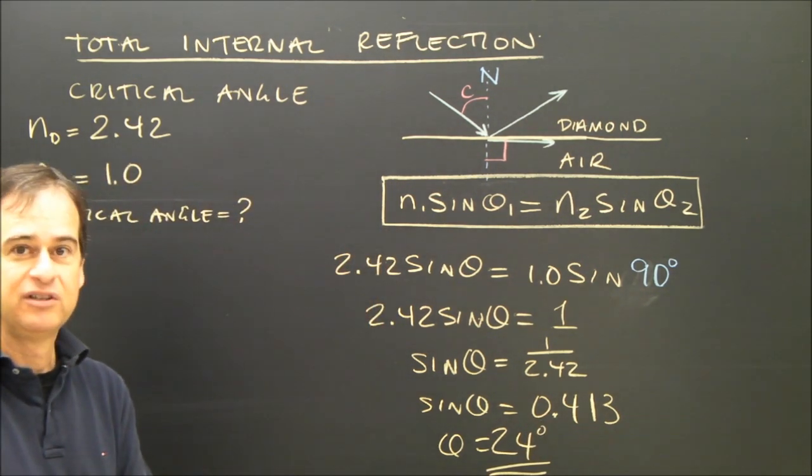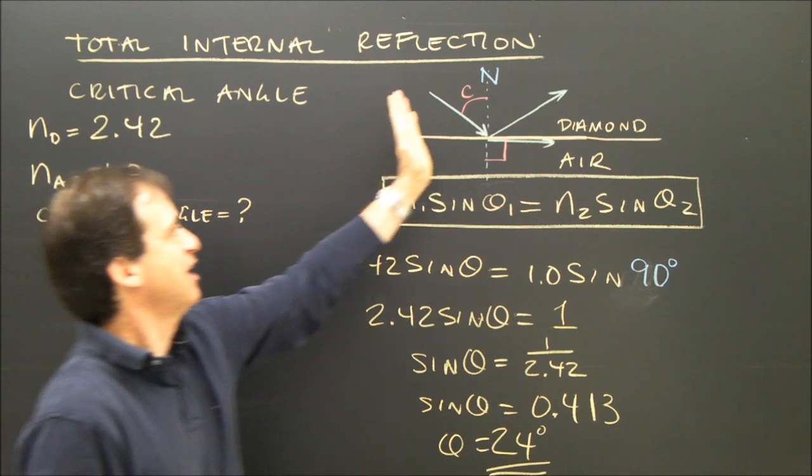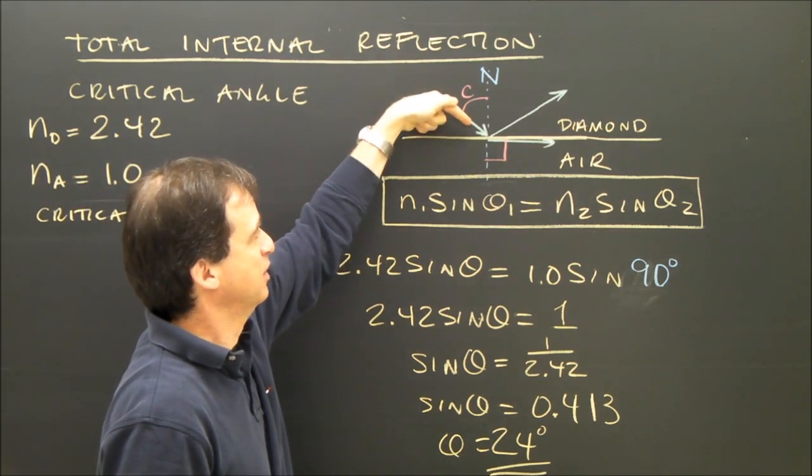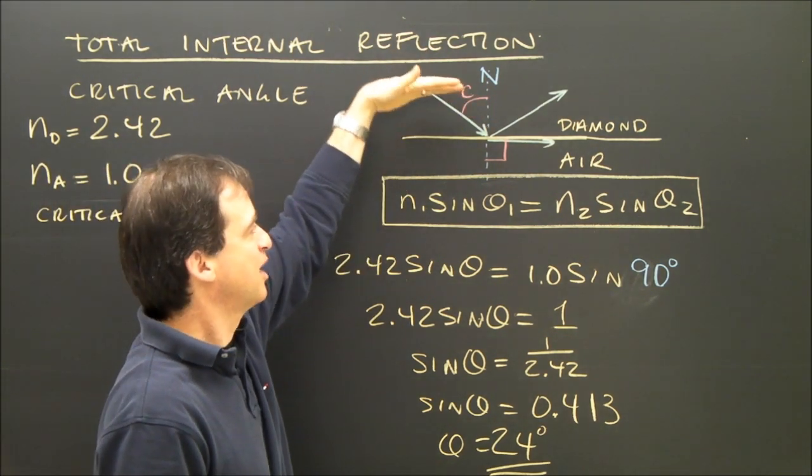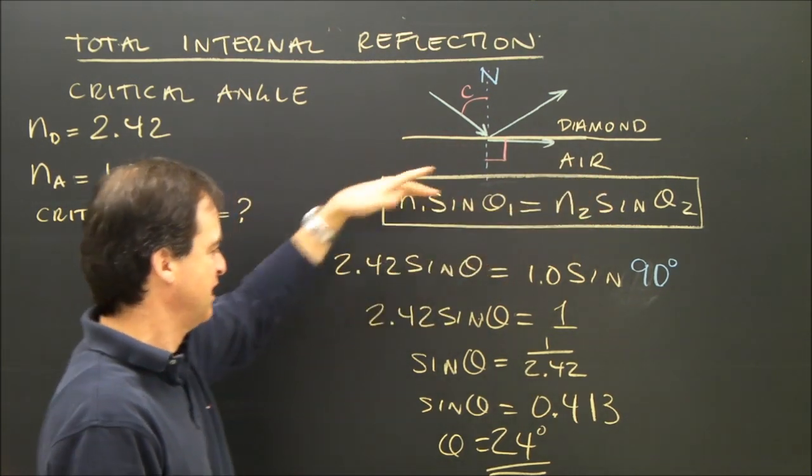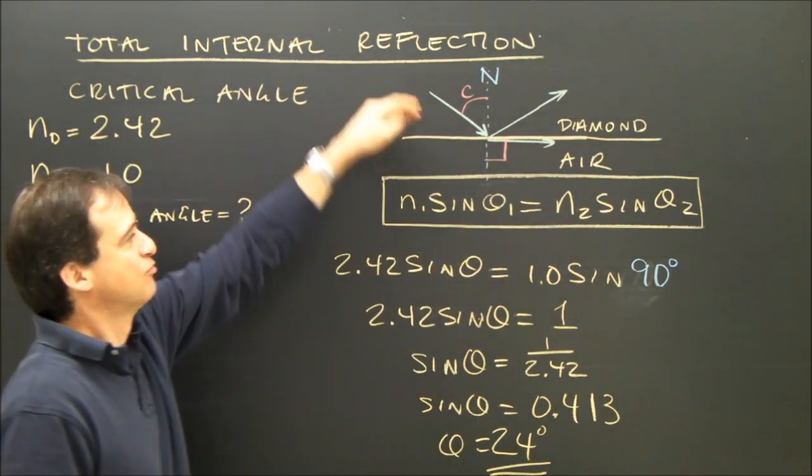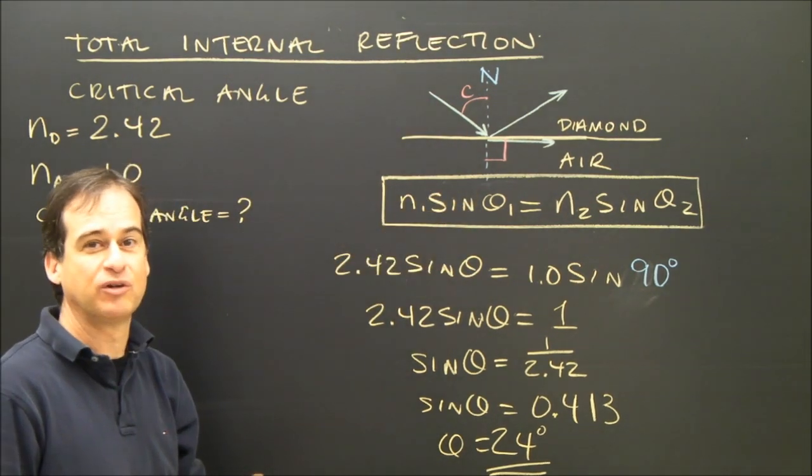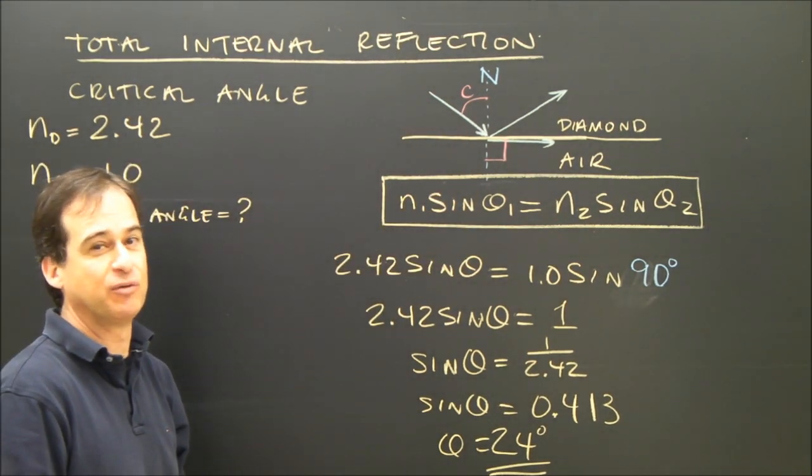The critical angle is 24 degrees. If I shine a light that's in a diamond at less than 24 degrees, it will be able to escape the diamond and go into the air and have an angle of refraction. If I send light in from diamond into air at an angle greater than 24 degrees, it's going to totally internally reflect.